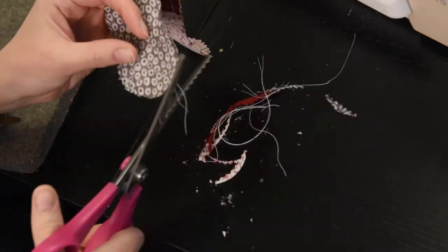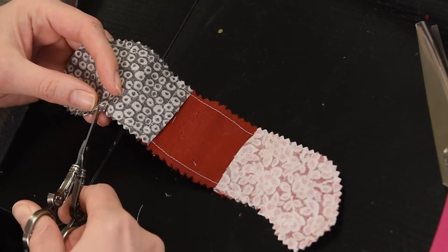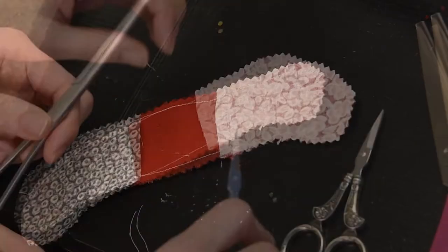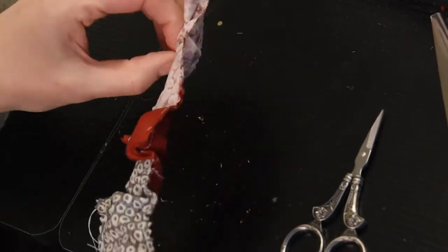You're going to clip the curves. I'm doing it with some pinking shears just because it's a little bit easier, but you want to make sure especially right there where kind of the ankle would be. You want to make sure that you clip that.